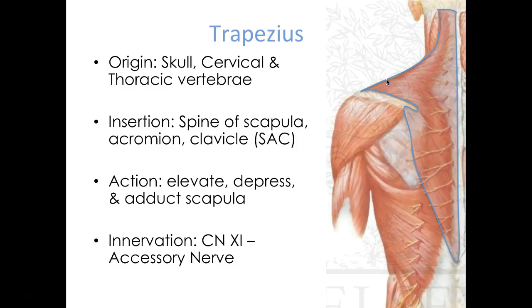Trapezius is the muscle assisting us in doing that shrug. Innervation here is cranial nerve number 11, which is the accessory nerve. This is one of those special muscles that gets innervated by a cranial nerve. All of the other cranial nerves are really within the head, except for the vagus nerve, which is cranial nerve number 10 — we'll get into that next quarter.